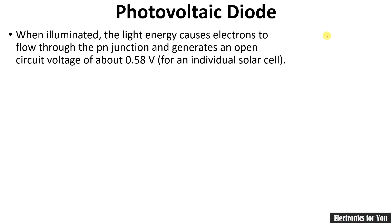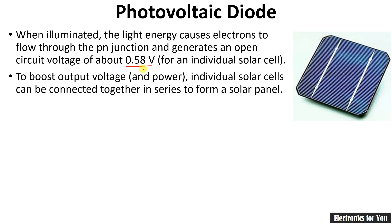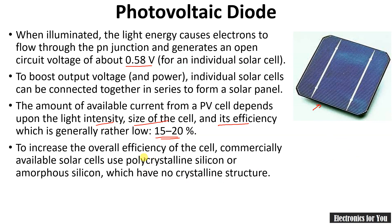The overall voltage provided by a photovoltaic diode is very low — only 0.5V per cell. If we want higher voltage and higher current, solar cells are connected in series in solar panels. The available current depends on the light intensity and the size of the cell — a larger cell provides larger current, and higher light intensity provides higher current. The efficiency is only about 15 to 20 percent, but can be increased by changing the material to polycrystalline silicon or amorphous silicon.